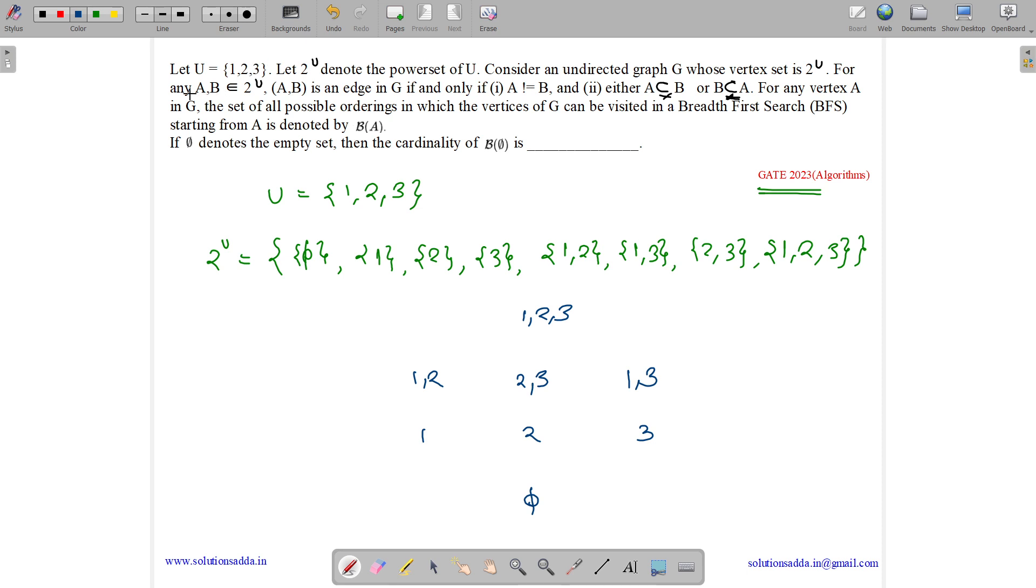Then it says for any A, B belongs to 2 to the power U, A, B is an edge in G if the first item shouldn't equal the second item, which means there is no self-loop. And either A is a proper subset of B or B is a proper subset of A.